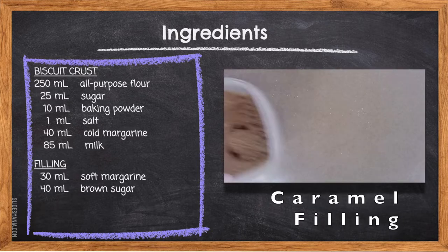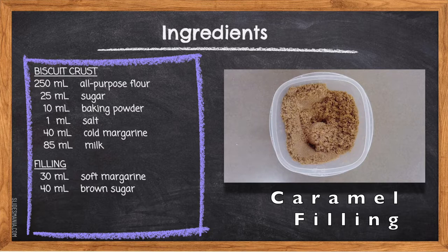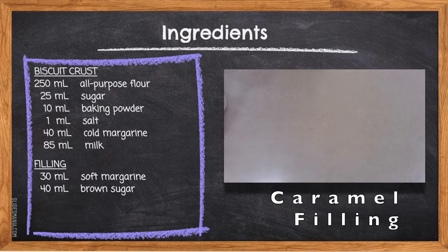40ml Brown Sugar. Brown sugar will create the caramel filling in the middle of your cinnamon pinwheel as it melts with the margarine in the oven. It also adds moisture to your biscuit dough, as the molasses found within brown sugar tends to be hygroscopic, holding on to as much moisture as it can.